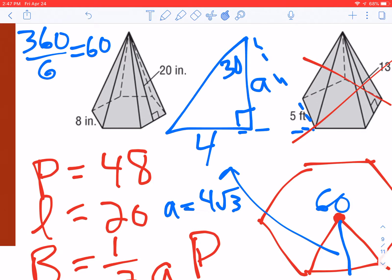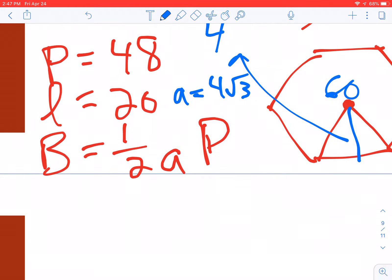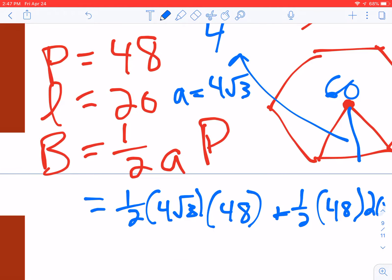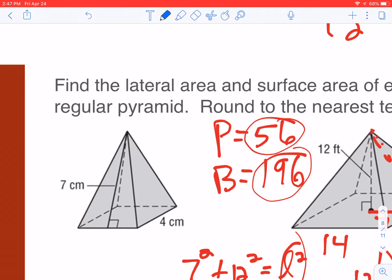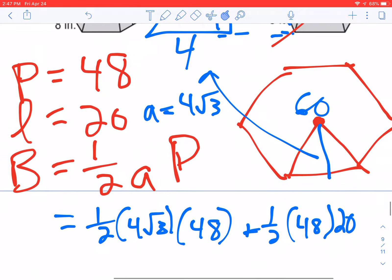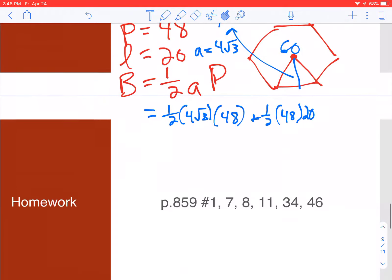Now I can plug it in: one-half times 4 root 3 times the perimeter of 48—that's the area of the base. Then add one-half times perimeter times slant height of 20. That was a quick way to do it; rewind if you need help remembering.